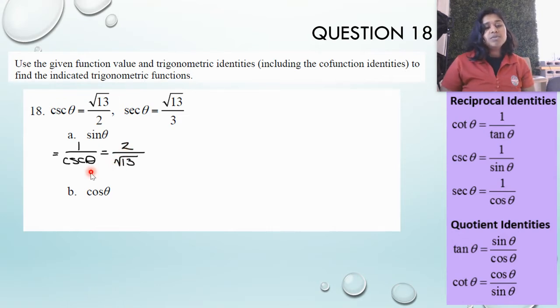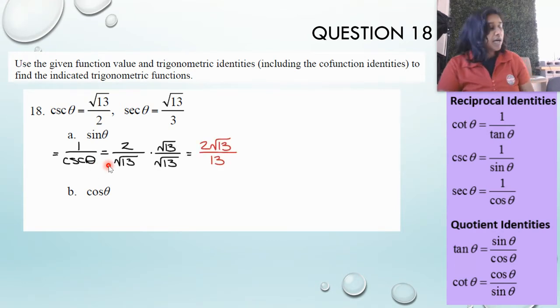However, if it was a multiple choice and you had to recognize the rationalized form, let me show you what that looks like. So I multiply by the rationalized form. So I multiply radical by radical to remove it, so there are no radicals in the denominator. So this is rationalization of a radical. A lot of R words, I know.